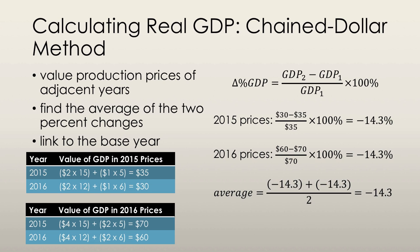To get the average, we simply add these two values and divide by 2. We got lucky this time because they're the same value, so the average is negative 14.3%. I picked these numbers specifically to note that it is possible for the change in real GDP to be the same at both price values, but it is more likely that the percentages will be slightly different.